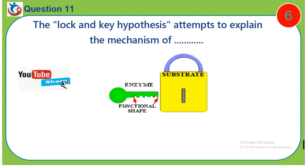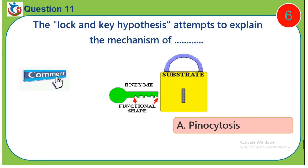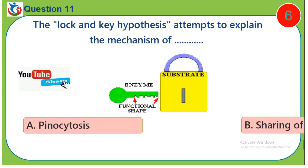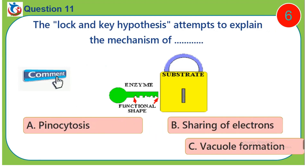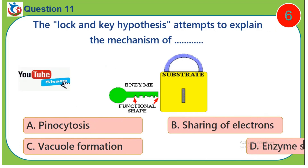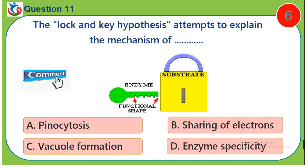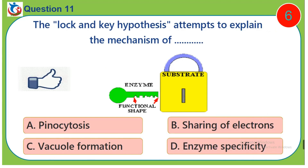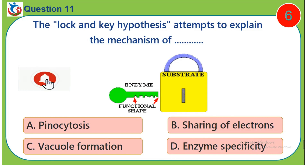Question 11. The lock and key hypothesis attempts to explain the mechanism of dash. A. Pinocytosis. B. Sharing of electrons. C. Vacuole formation. D. Enzyme specificity.